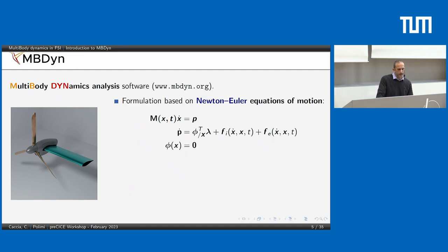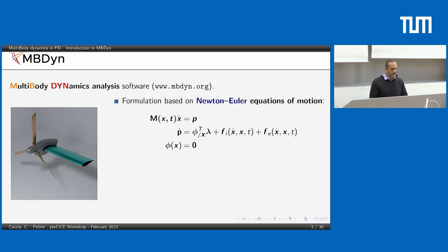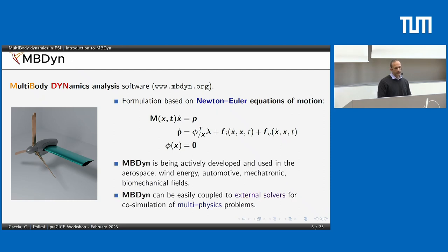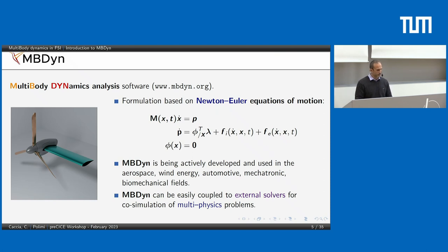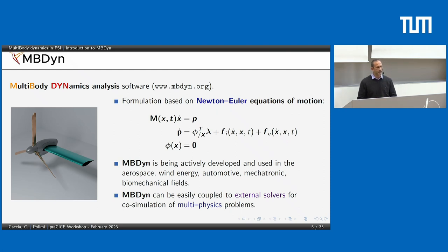MBDyn's formulation is based on the Newton-Euler equations of motion. It builds the complete set of equations — the equations of motion and the constraint equations. Constraints can be holonomic, anholonomic, and so on, and can also be user-defined. It is actively developed and used in many research topics: aerospace is its primary domain, but also wind energy, autonomous vehicles, automotive, and biomechanical studies.